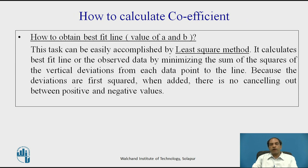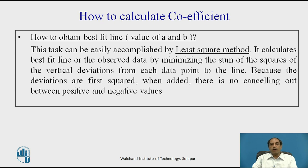To obtain a best-fit line and find values of a and b, we use the least squares method. It calculates the best-fit line for observed data by minimizing the sum of the squares of the vertical deviations from each data point to the line. Because deviations are squared before being added, there is no canceling out between positive and negative values. Linear regression finds the line with the minimum possible sum of squares — hence the name least squares method.